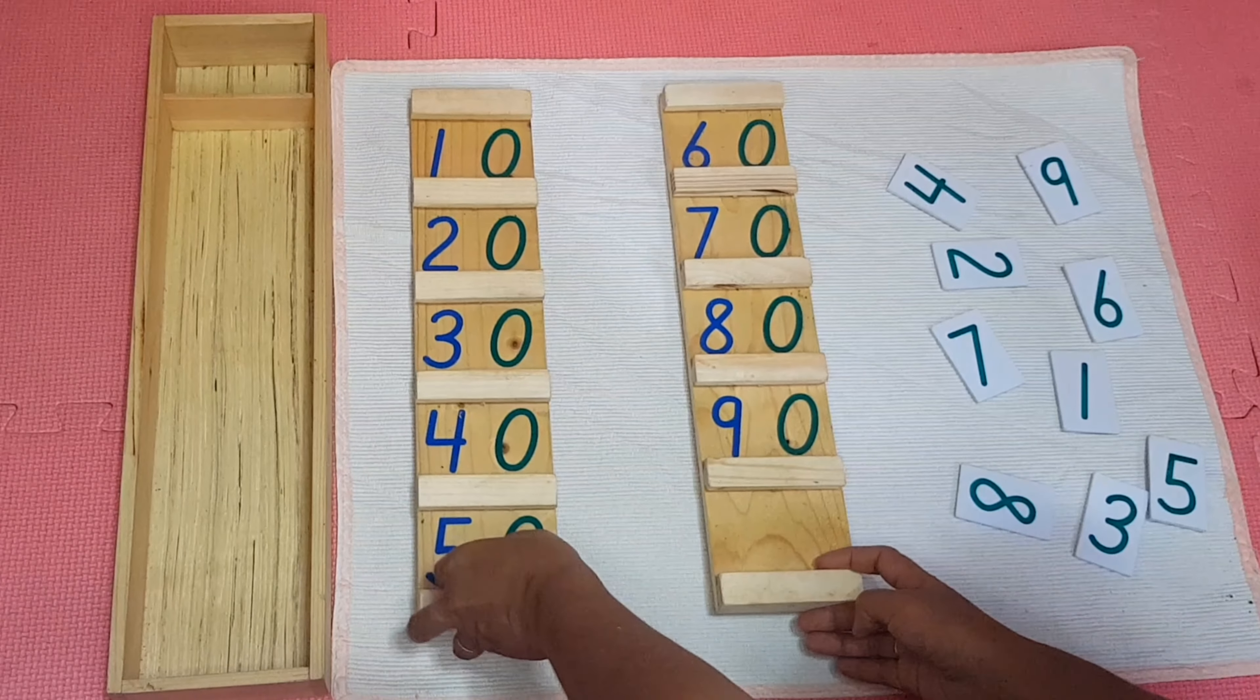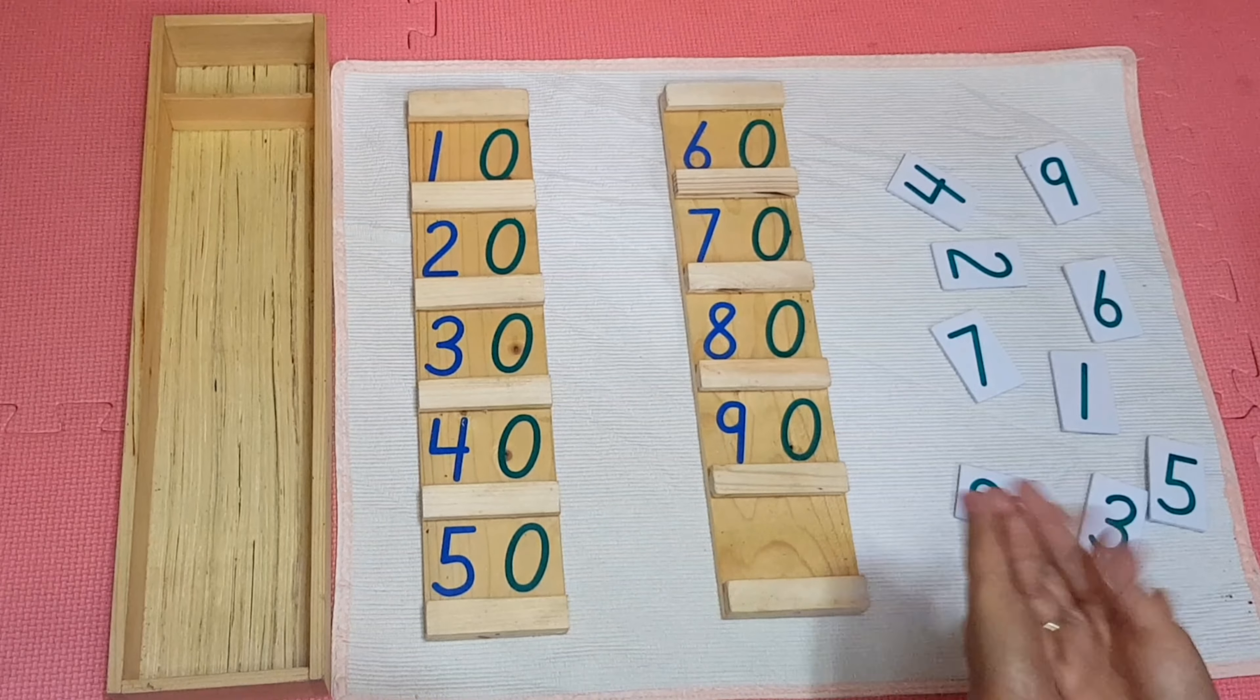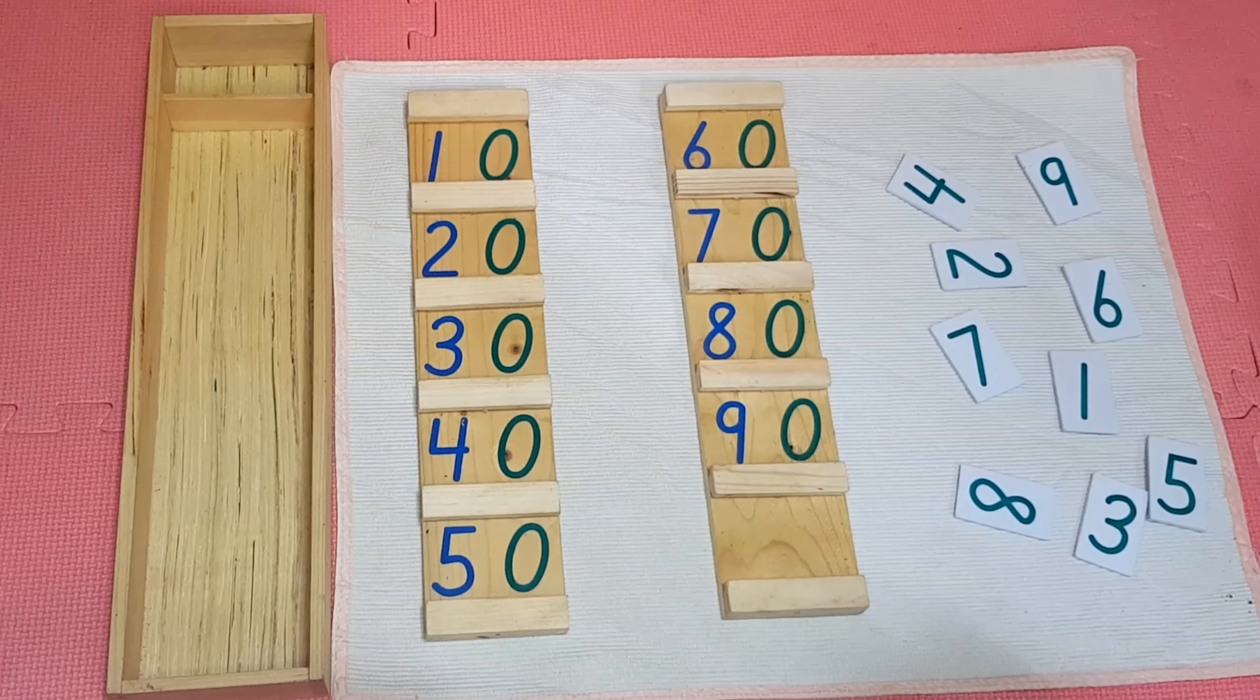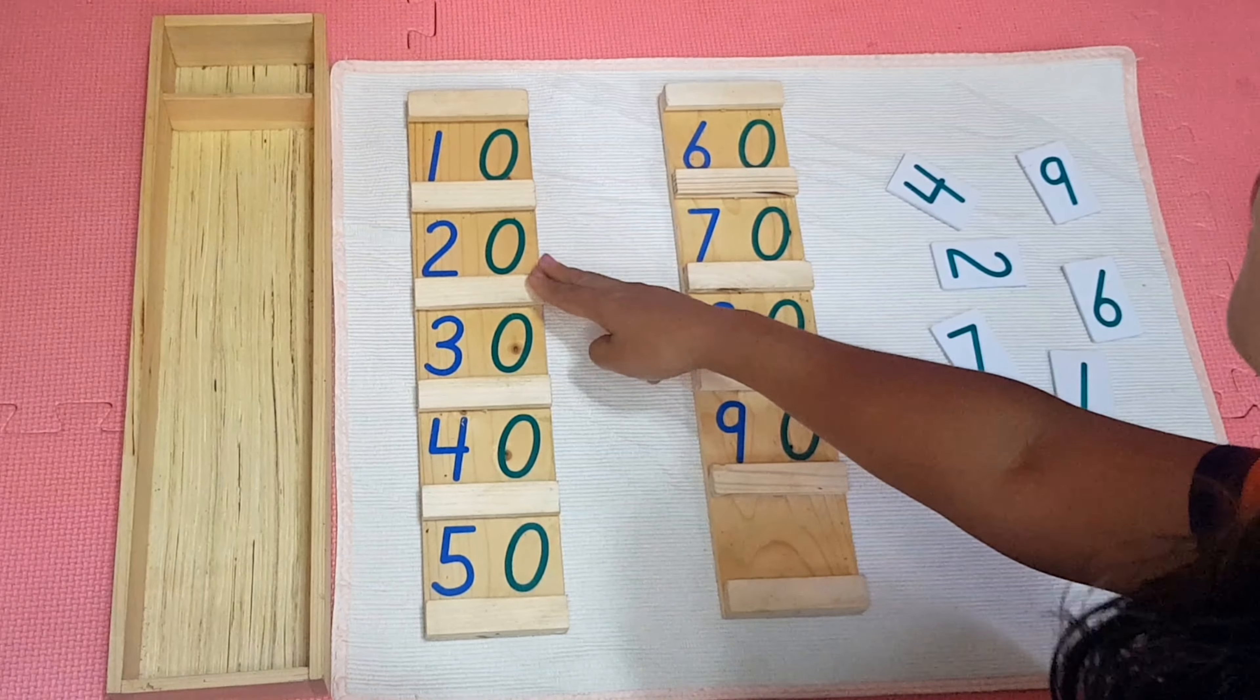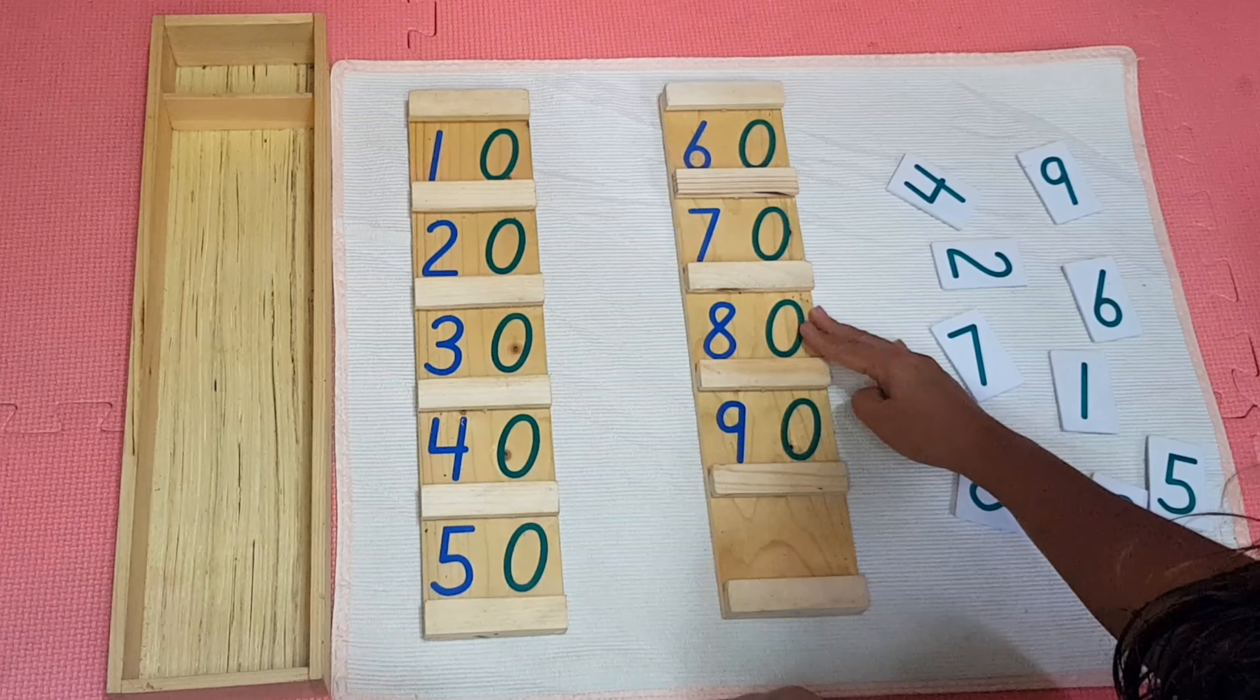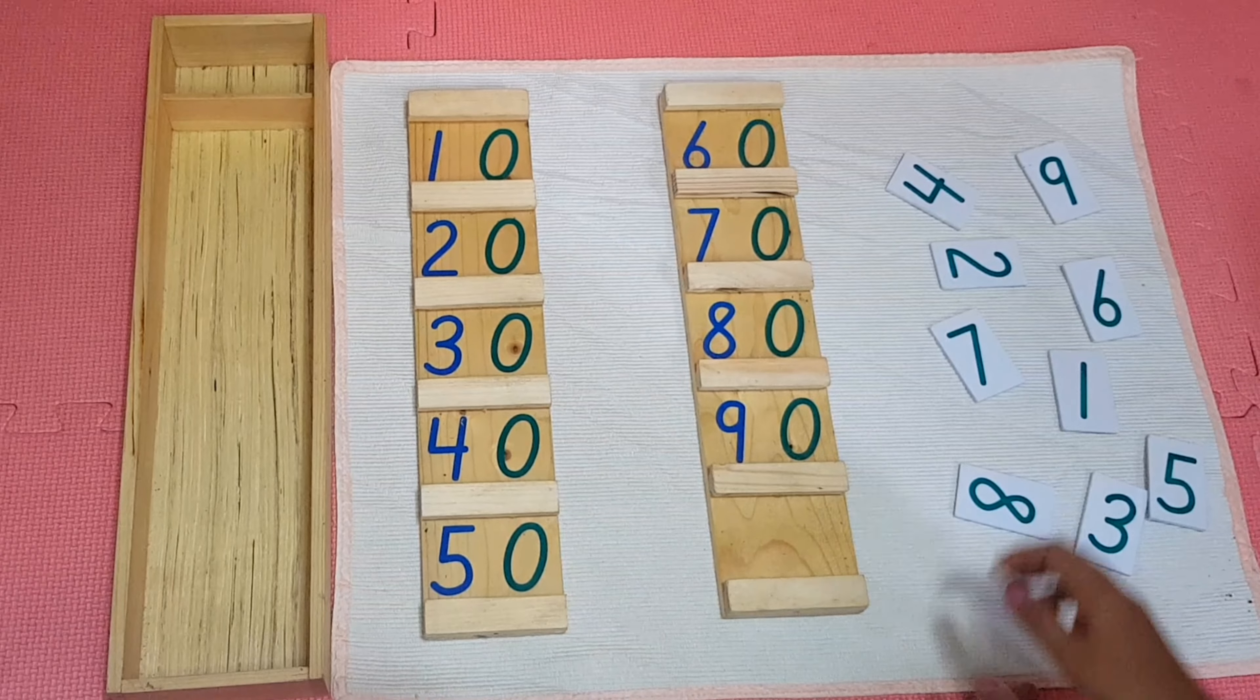Hello, remember the teen boards I showed you last time? Let's play more with this material. I have here the teen boards. It says 10, 20, 30, 40, 50, 60, 70, 80, 90. I have here some numbered cards. They are randomly arranged. Now watch.